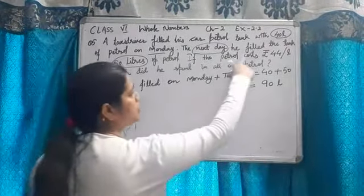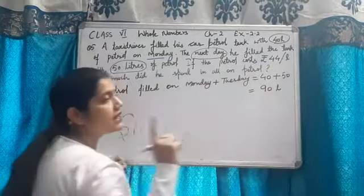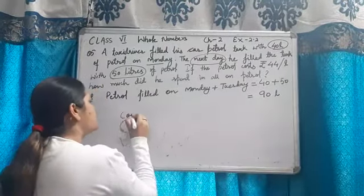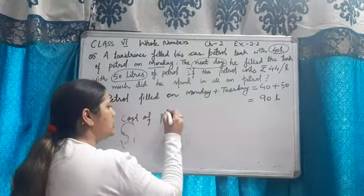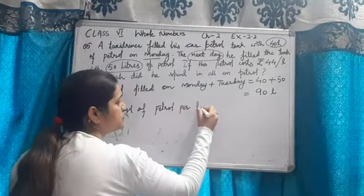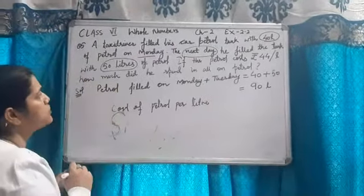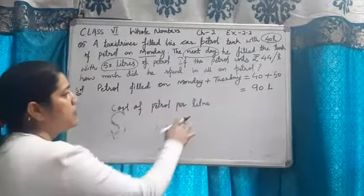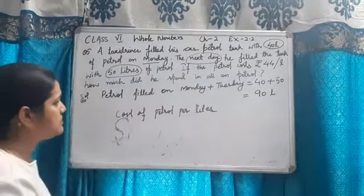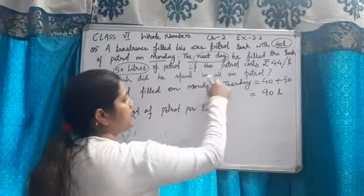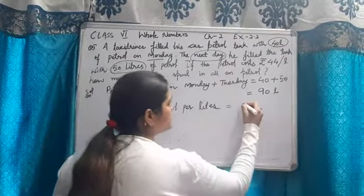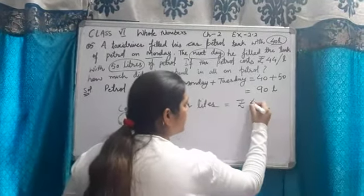If the petrol cost rupees 44 per litre, 1 litre petrol ki cost agar 44 rupees hai, cost of petrol per litre. How much did he spend in all? Total cost find karnei hai. Cost of petrol per litre is rupee 44.